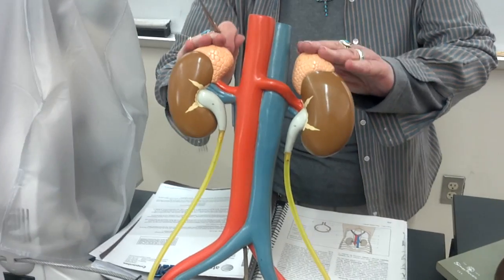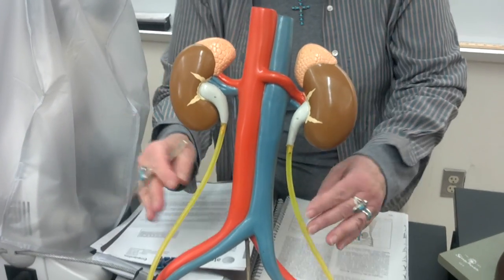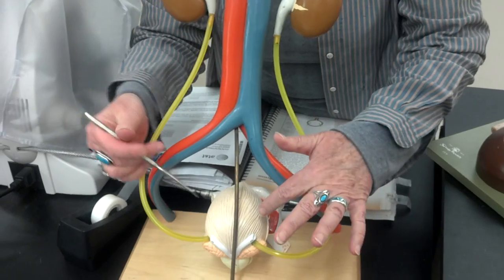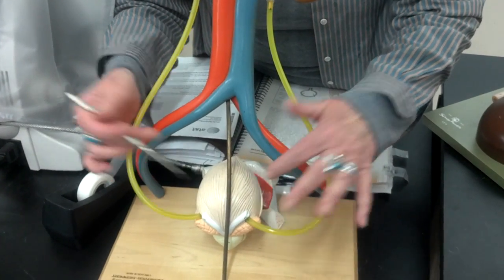Here are the adrenal glands, the kidney, the two ureters going into the bladder.